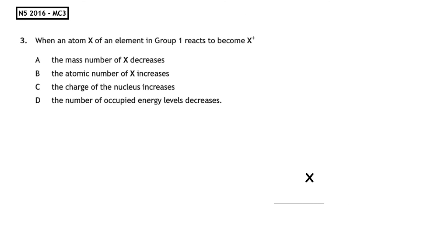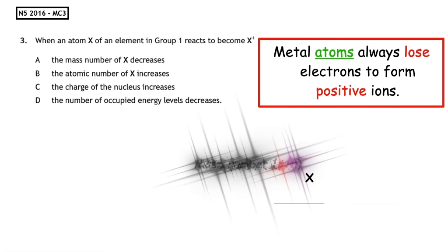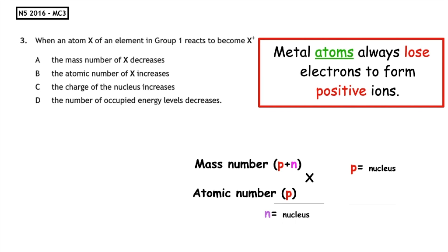This past paper question comes from the National 5, 2016, multiple choice 3. When an atom X of an element in Group 1 reacts, it becomes X+. So we can see that X has a positive charge. Metal atoms always lose electrons to form positive ions, so we're looking at the quantity of electrons that that ion has — this is the subatomic particle which is changing. The mass number looks at the number of protons and neutrons. The atomic number is equal to the number of protons. The charge of the nucleus focuses on the protons and neutrons found there. So the correct answer must be D: the number of occupied energy levels decreases, as this is where the electrons can be found.